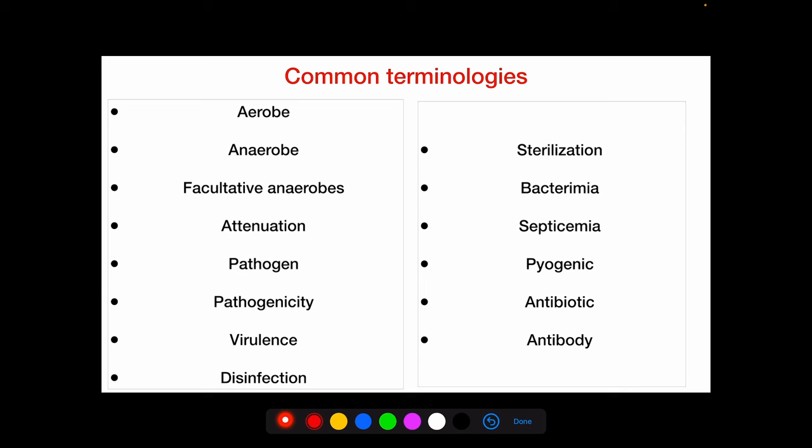Here are some important microbiology terms. Aerobes are organisms that grow in the presence of atmospheric oxygen. Anaerobes grow in the absence of free oxygen. Facultative anaerobes do not require oxygen for growth but can grow in its presence. Attenuation means reducing the virulence of a microorganism while still being able to provoke an immune response. A pathogen is any virus, bacteria, or agent that can cause disease. Pathogenicity is the ability to cause disease, and virulence is the degree or intensity of pathogenicity.